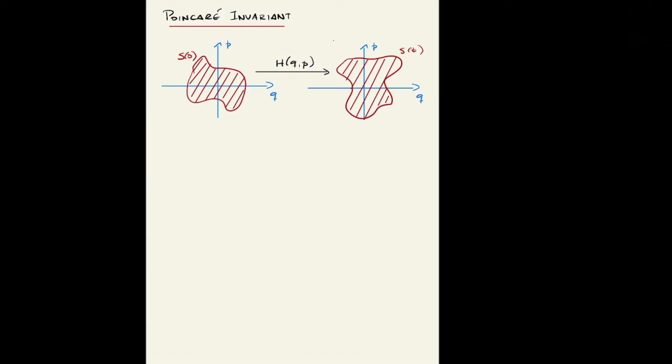Consider that you have a surface in phase space. The surface is S0, as shown on the left-hand side. This surface is composed of unique combinations of point Q and P.